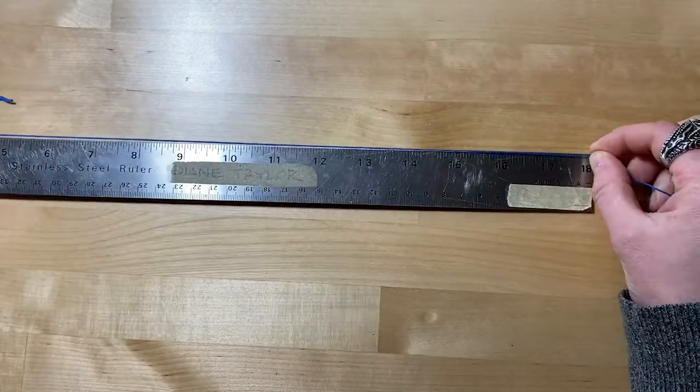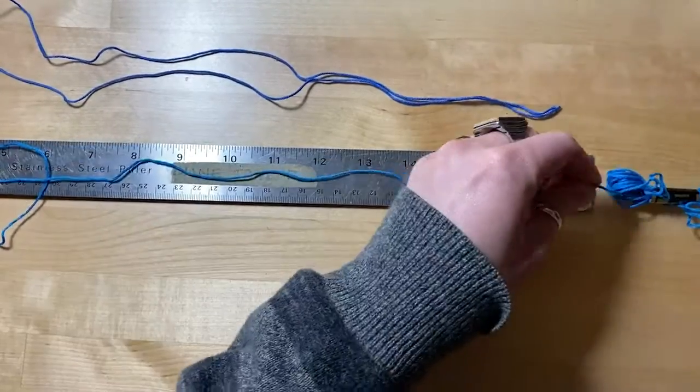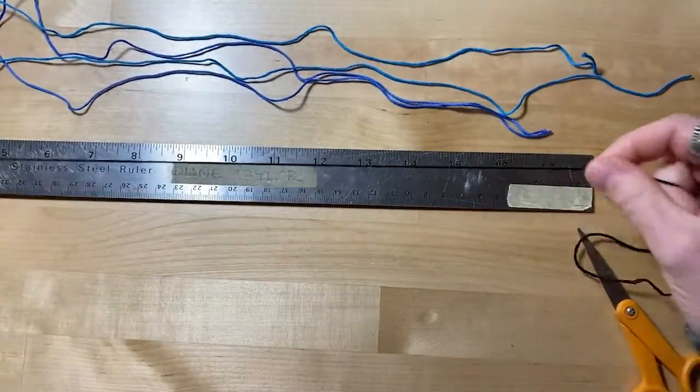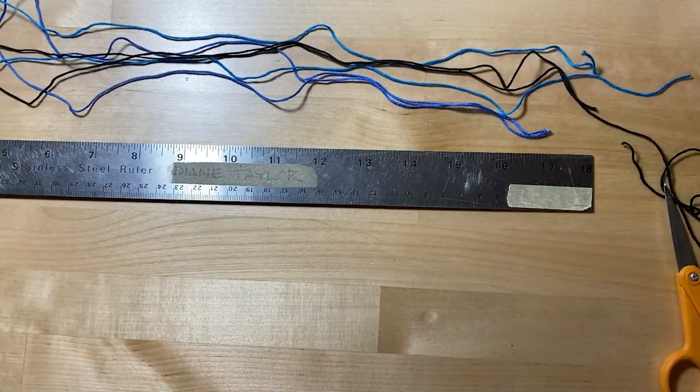For the tornado, which is the most simple, you are going to need to cut your chosen colors of string. I would suggest at least three different colors and they each should be 34 to 36 inches, about three feet of string.